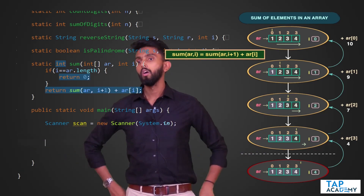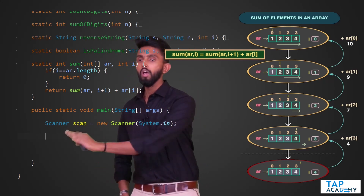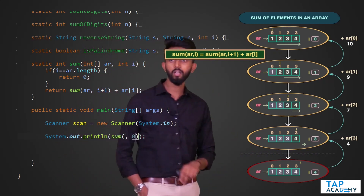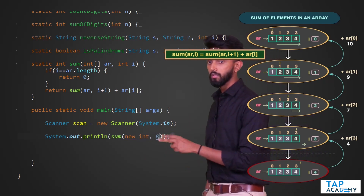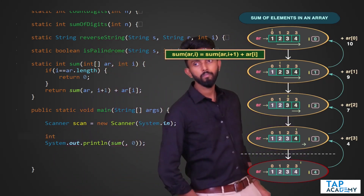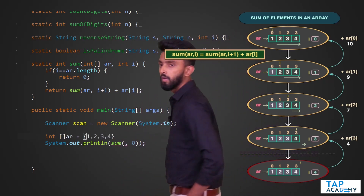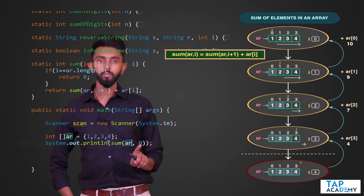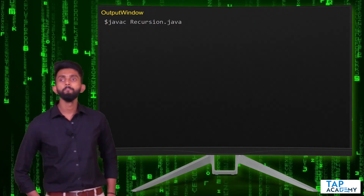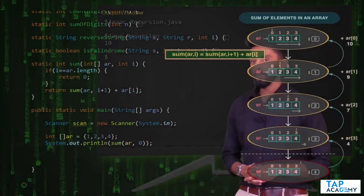I'll directly pass an array inline — sum(new int[]{1,2,3,4}, 0) — since i always starts at zero (first element). Running it gives output 10. One plus two plus three plus four is indeed 10.